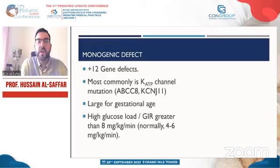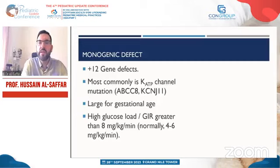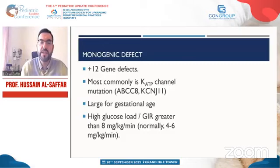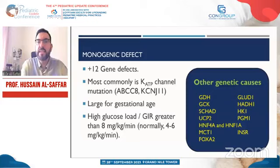Babies with these gene mutations are usually born large for gestational age — macrosomic. The glucose infusion rate required is greater than 8 mg/kg/minute, whereas normally the glucose requirement is 4–6 mg/kg/minute. If the requirement exceeds this, it can be an indication of ongoing hyperinsulinism. Clinicians need to be aware of other genes beyond ABCC8 and KCNJ11 as listed on this slide.